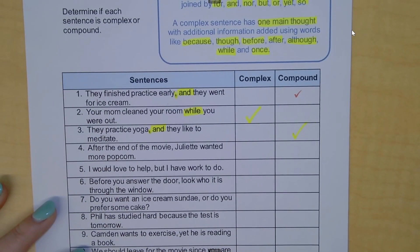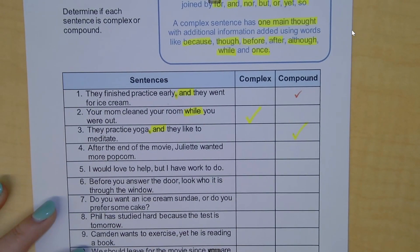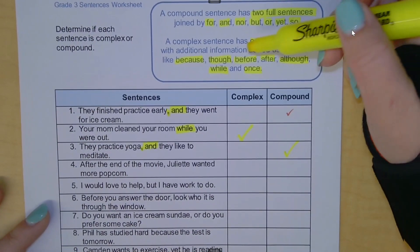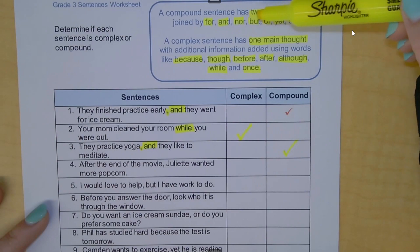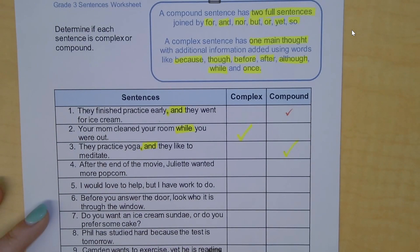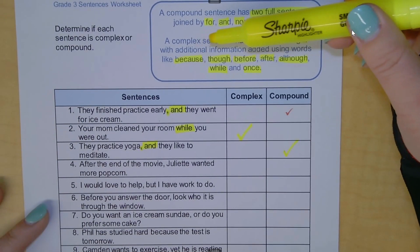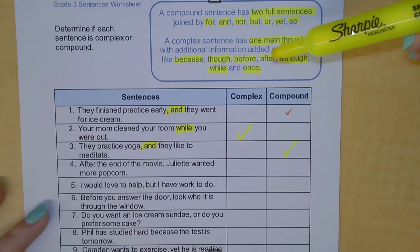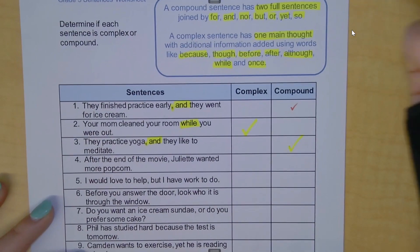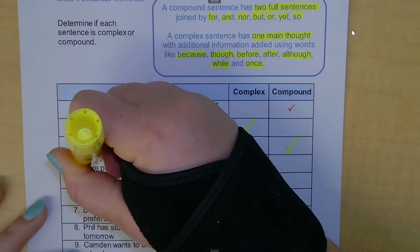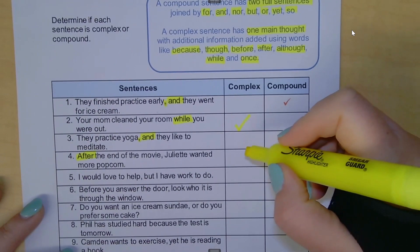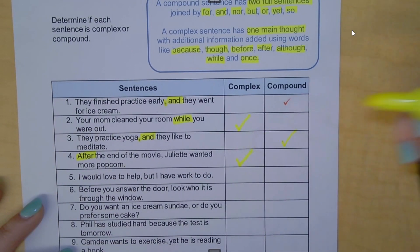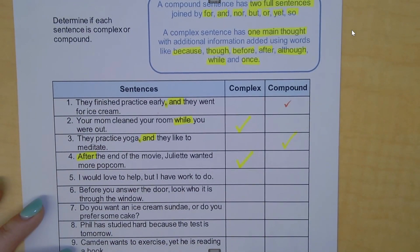Number four: 'After the end of the movie, Juliette wanted more popcorn.' Do we see a FANBOY? No. Do we see one of our clue words? Yes — 'after.' After is our clue word, so this is a complex sentence.